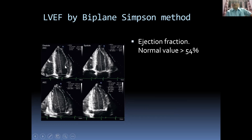You measure in diastole and systole in both four-chamber and two-chamber views. The normal ejection fraction is more than 54 percent.